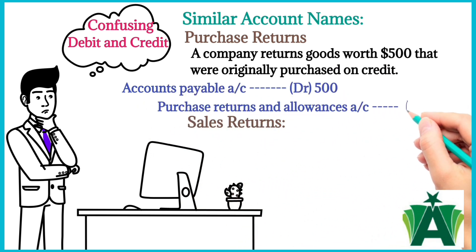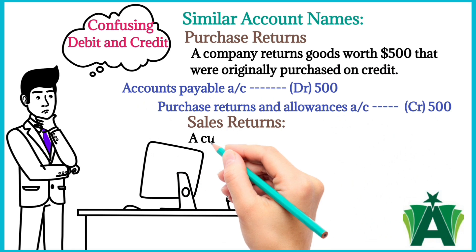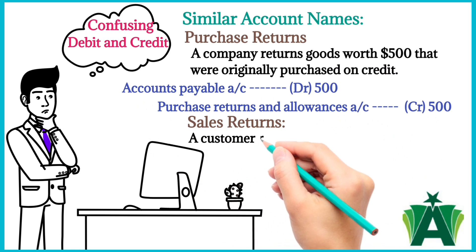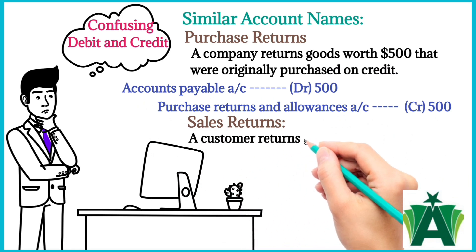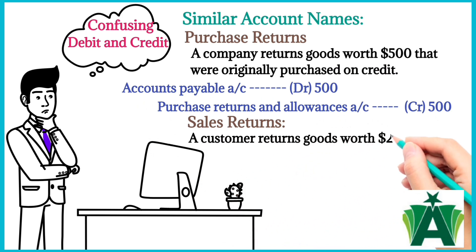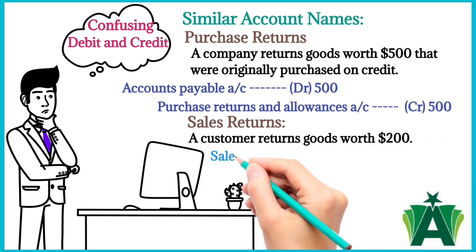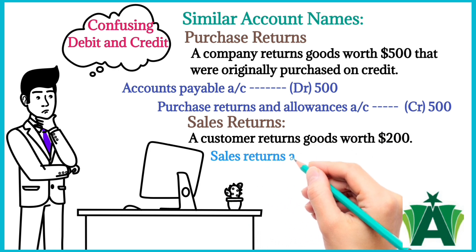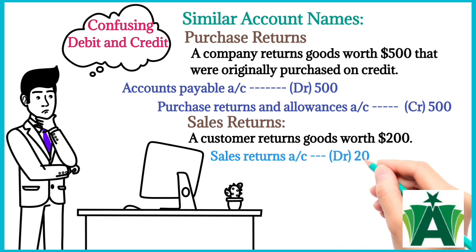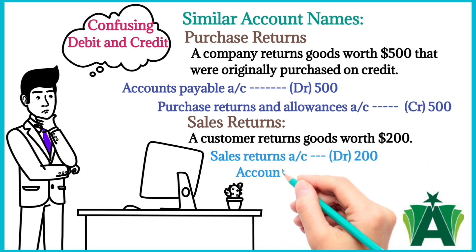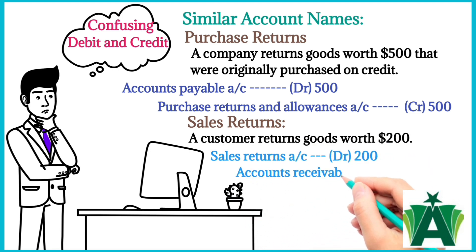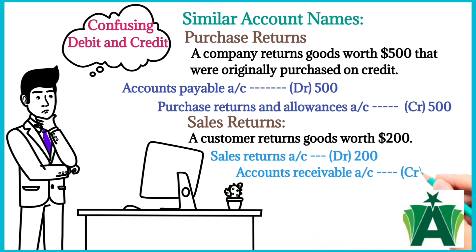A customer returns goods worth $200 that were originally purchased on credit. The journal entry would be: sales returns and allowances account debit, accounts receivable account credit.